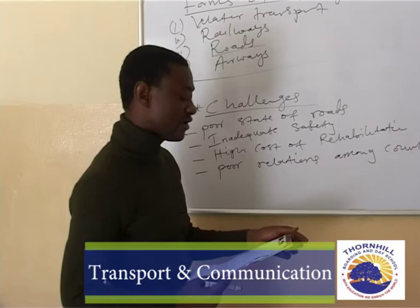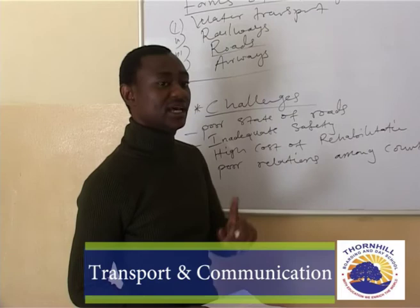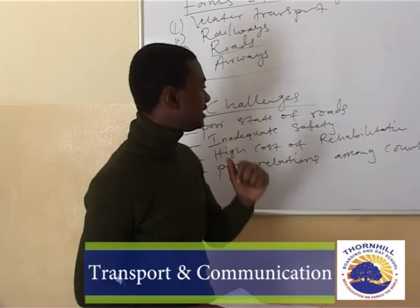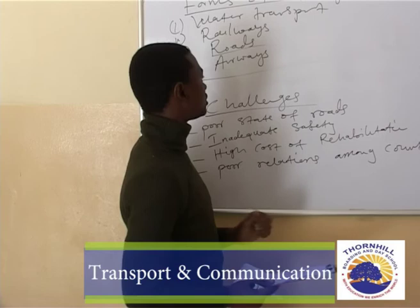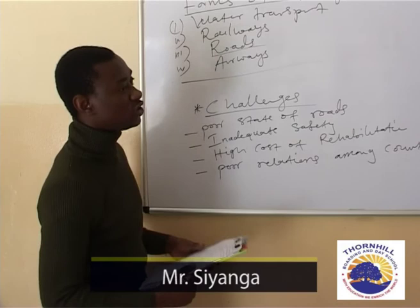The fourth form is airways. In Zambia we have airfields as well as international airports. There are four major international airports: Kenneth Kaunda International Airport, Harry Mwanga Nkumbula in Livingstone, Mfuwe International Airport in the eastern part of Zambia, and Simon Mwansa Kapwepwe in Ndola. So the four forms of transport are water, railway, roads, and airways.